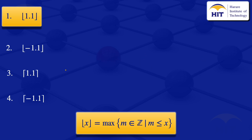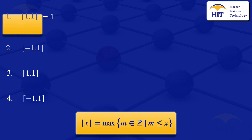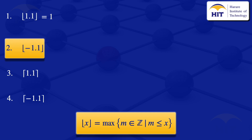We can visualize this by drawing a number line, starting from 0, 1, 2, and 3. Then we can place 1.1 on the number line. The number directly to the left of 1.1 is 1, so the floor value of 1.1 is 1.